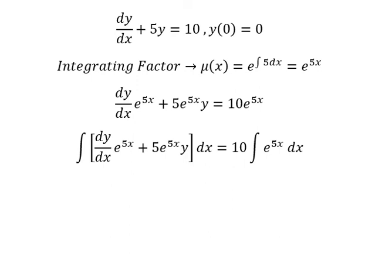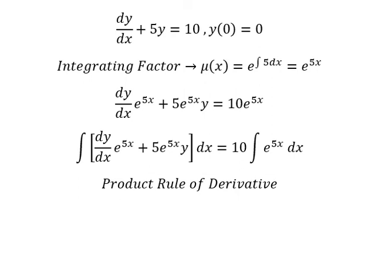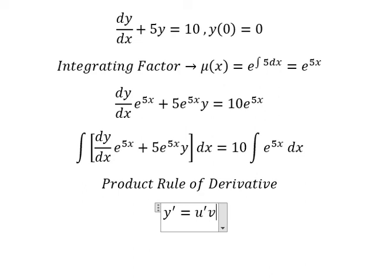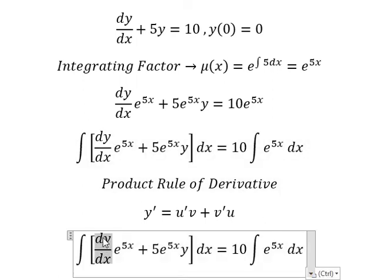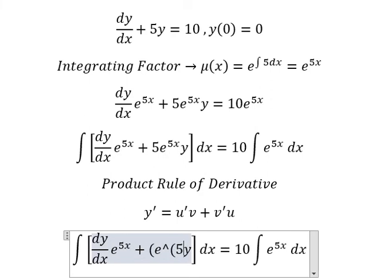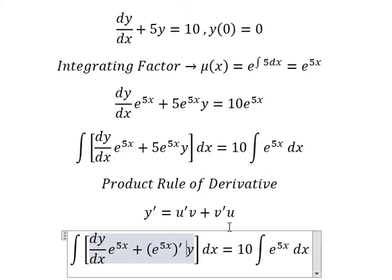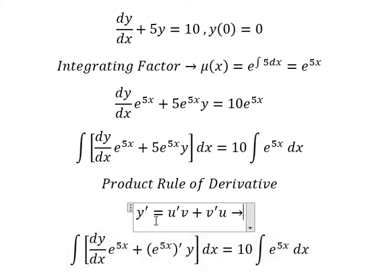Next we apply the product rule of derivative. We know that the first derivative of (uv) equals the first derivative of u multiplied by v, plus the first derivative of v multiplied by u. This term is the first derivative of u multiplied by v, and this term is the first derivative of v multiplied by u. So the integral of this gives us y equals u times v.